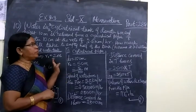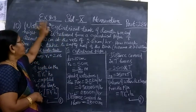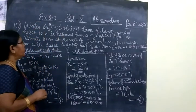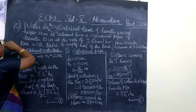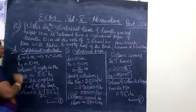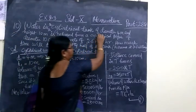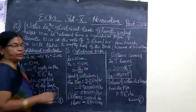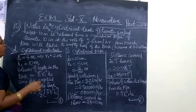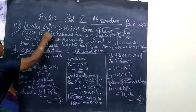Today we want to see part 284, Mensurations exercise 8.3, the 10th question. Water in a cylindrical tank of diameter 4 meters and height 10 meters.